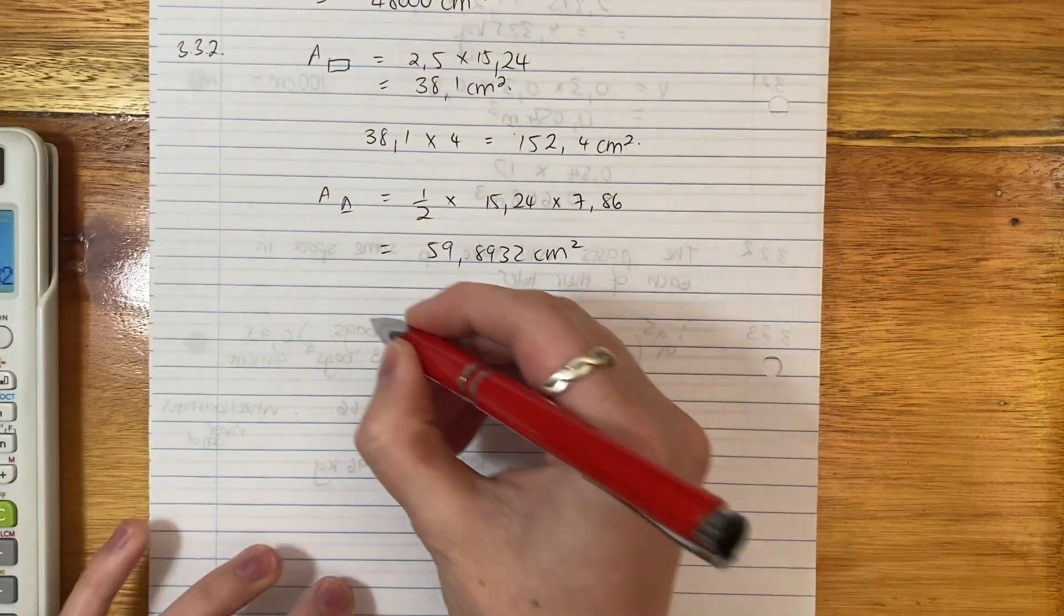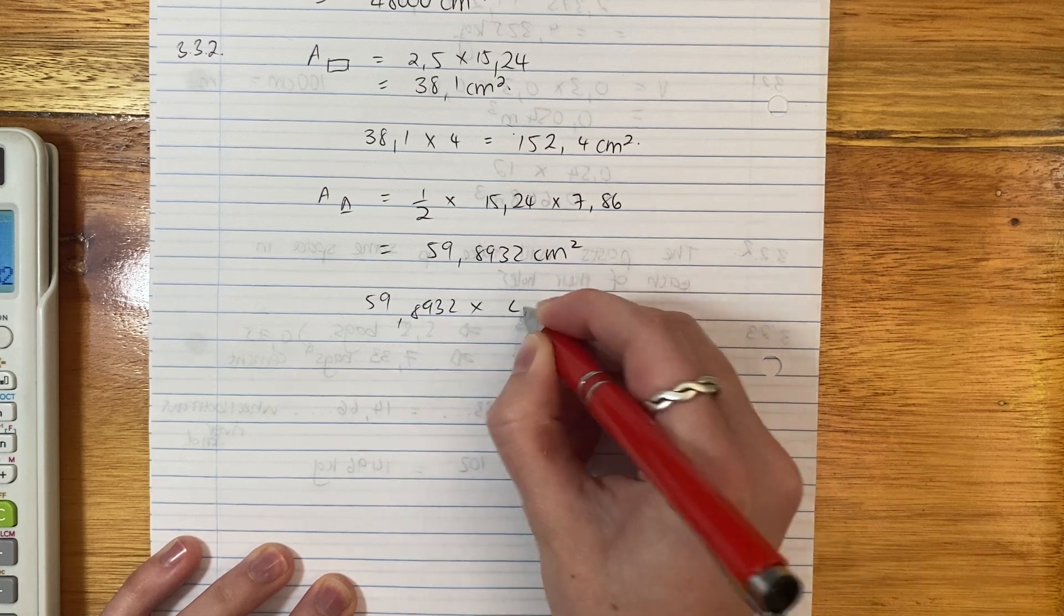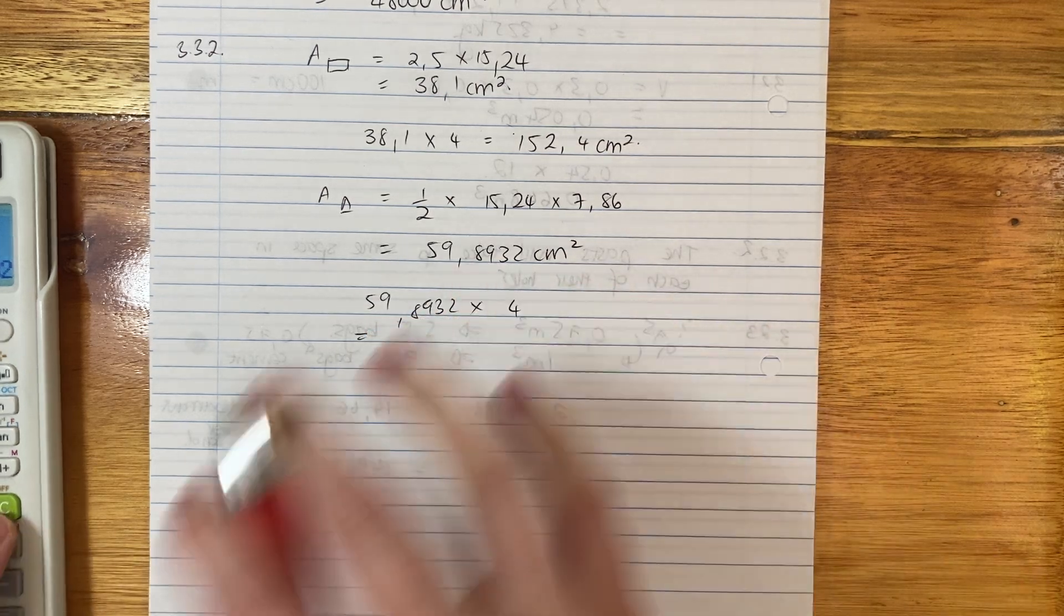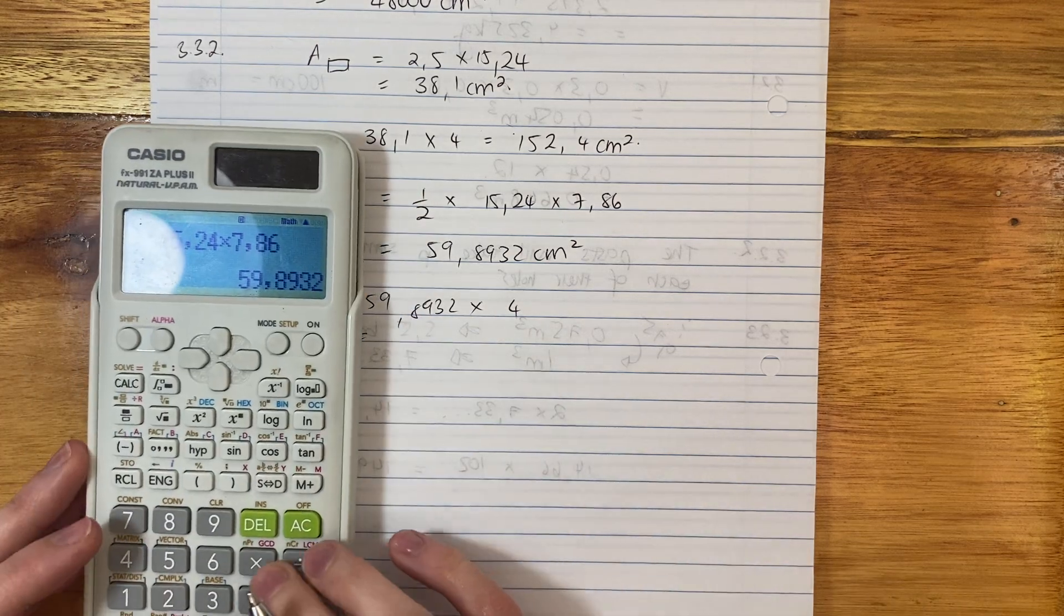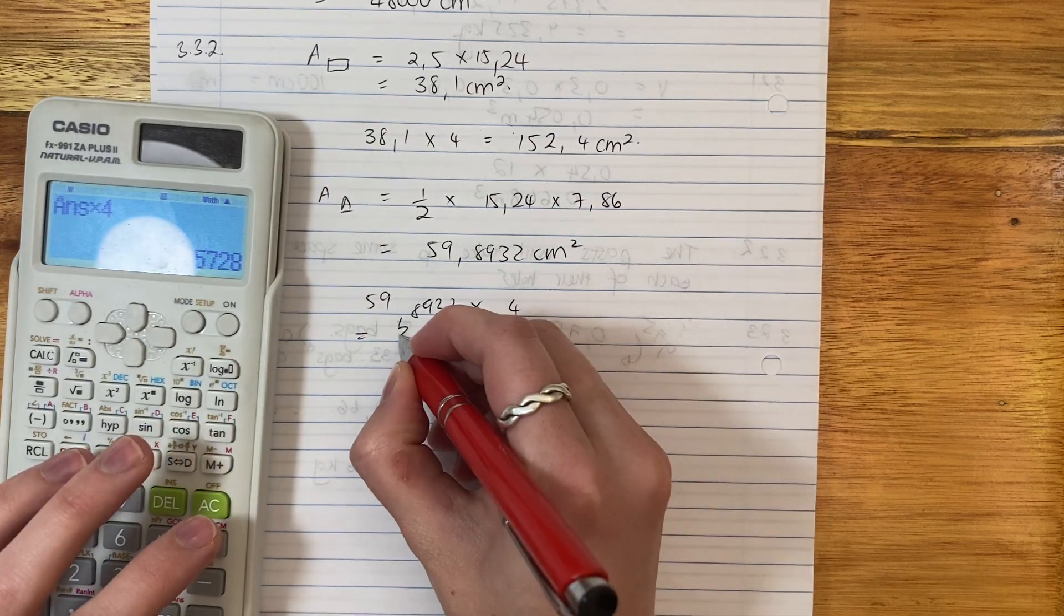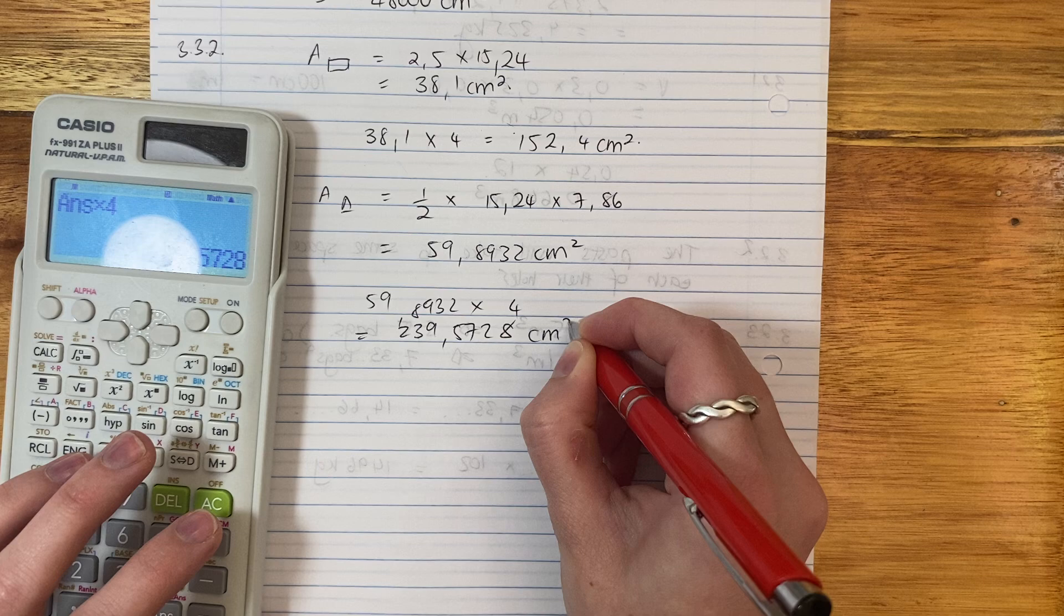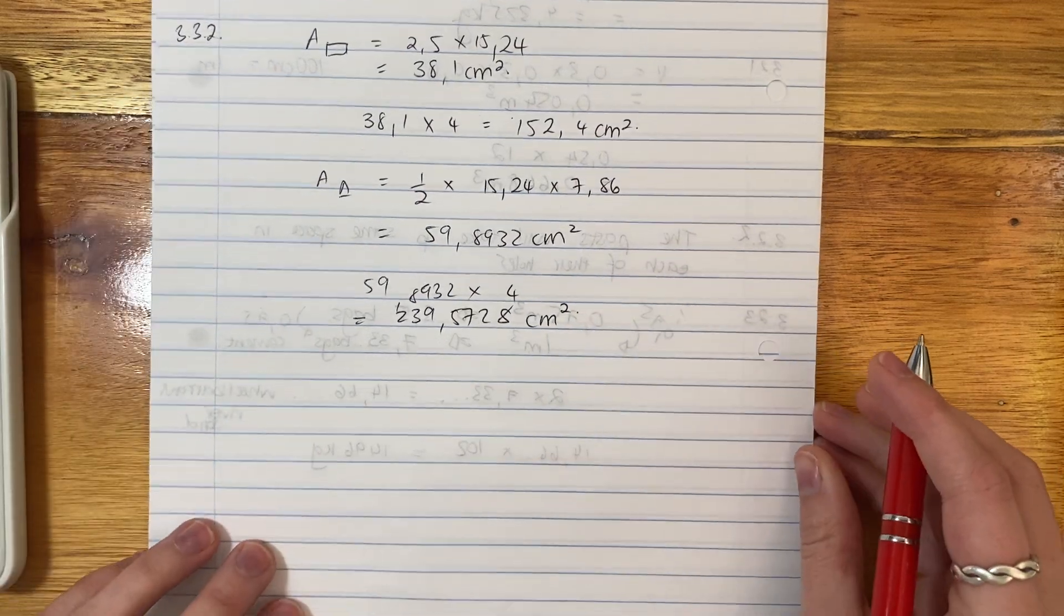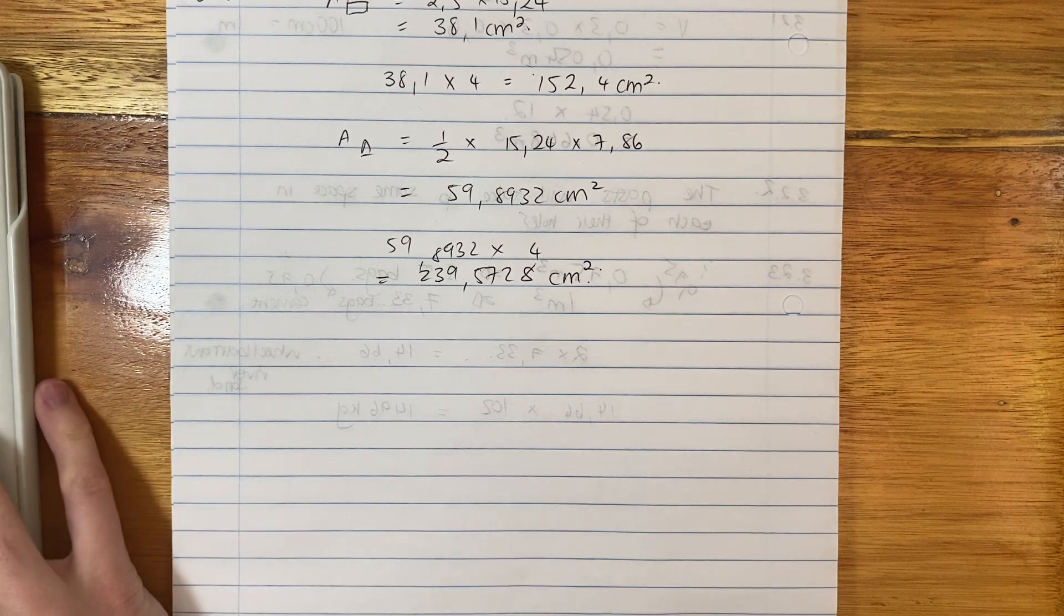I'm not rounding off, it's not my final answer. We're only rounding off at the end. Similarly to above though, there isn't just one triangle in each cap. There's actually one, two, three, four. So now we have to say 59.8932, we have to times it by four to get for a whole cap.